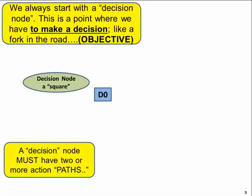We always start with the decision node. This is our objective and we have to make a decision. A decision node is always a square node. We use the color blue. You can use any color you like. I prefer you stay with our recommendations so that we are consistent. And the first node is always D0.